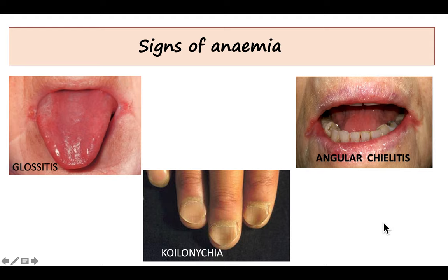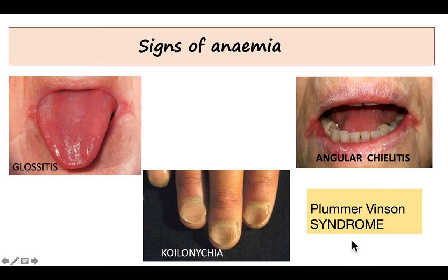Plummer-Vinson syndrome means iron deficiency anemia plus dysphagia. The patient has dysphagia because a membranous web is present at the post-cricoid area of the esophagus, so when swallowing food the patient experiences difficulty. So iron deficiency anemia combined with this dysphagia is called Plummer-Vinson syndrome.